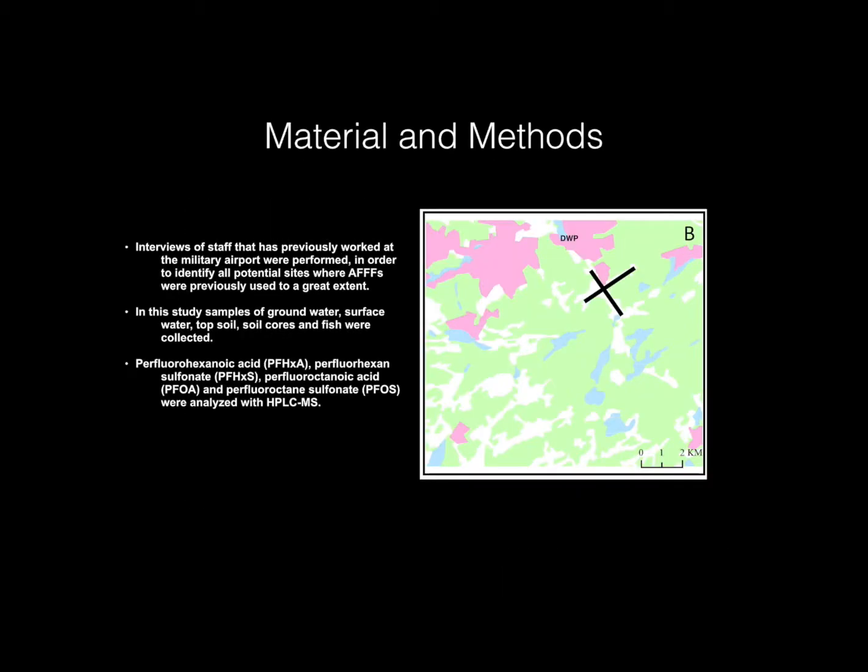Materials and methods. On the figure to the right, we can see the black cross which marks the landing strip of the former military airfield F-18. And if we create a red box around it, we can see that this area is larger than four square kilometers.